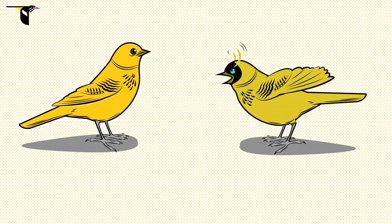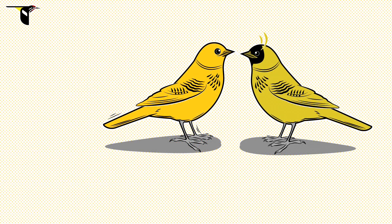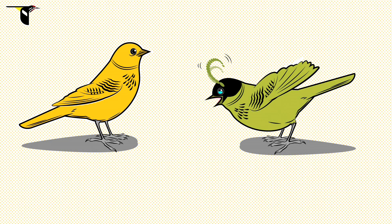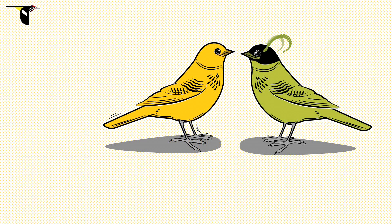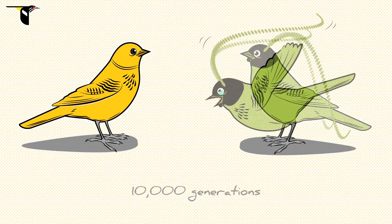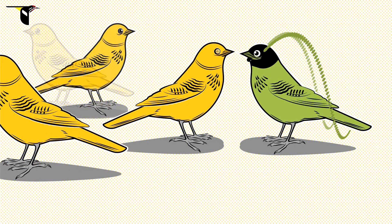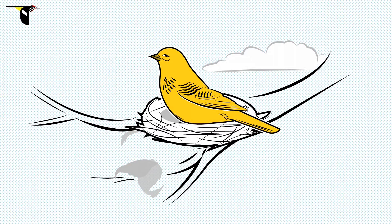Just as before, early in the speciation process when individuals from isolated populations meet, eastern and western birds readily mate. But as generations pass and the eastern males become fancier, the western females begin to find the eastern males' habits foreign and surprising. But these traits are clearly not deal-breakers — even after 10,000 generations of geographic isolation, some of the western females continue to find the males' displays attractive.